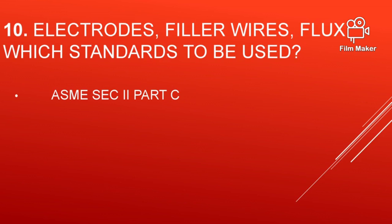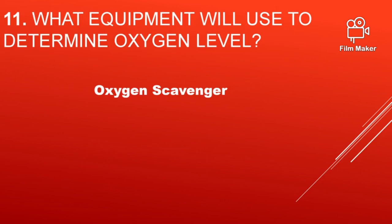For electrodes, filler wires, and flux — which standard is to be used? Normally ASME Section 2, Part C is used, which covers the standards for electrodes, filler wires, and flux. It gives all the details about these welding consumables.